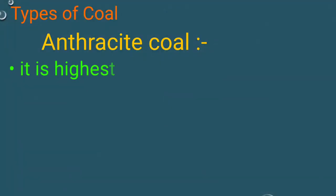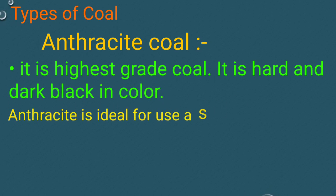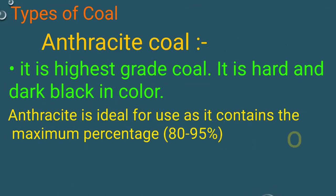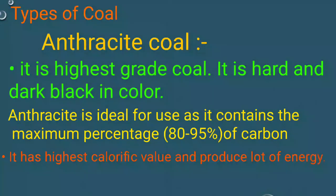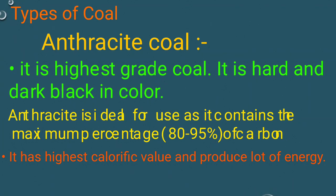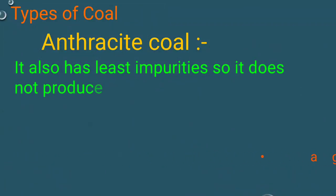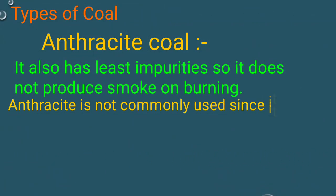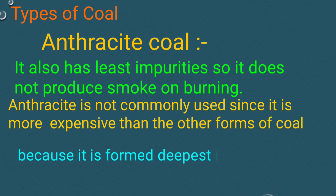Anthracite is the highest grade coal. It is hard and dark black in color. Anthracite is ideal for use as it contains the maximum percentage — 80 to 95 percent — of carbon. It has the highest calorific value and produces a lot of energy. It also has the least impurities, so it does not produce smoke on burning. Anthracite is not commonly used since it is more expensive than other forms of coal, because it is formed deepest inside the earth.